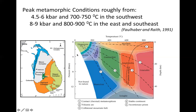The temperature in the southwest part of the Highland Complex is about 700–750°C, at pressures of 4.5–6 kilobars, corresponding to a specific region on the P-T diagram. In the eastern and southeastern parts of the Highland Complex, temperatures are about 800–900°C and pressures around 8–9 kilobars — higher conditions.